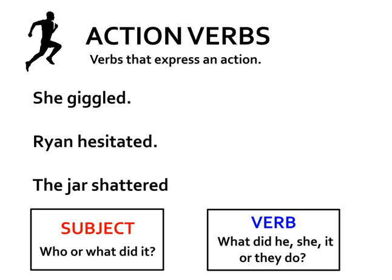You should have gotten this right — it's super simple. 'She giggled.' What is giggling? She. What did she do? She giggled. So my subject is 'she' and 'giggle' is my verb. Check that you got that right.